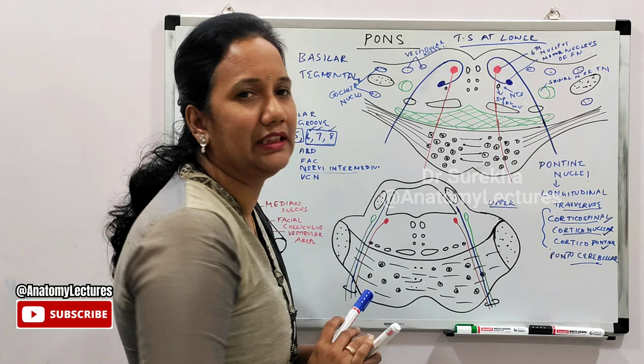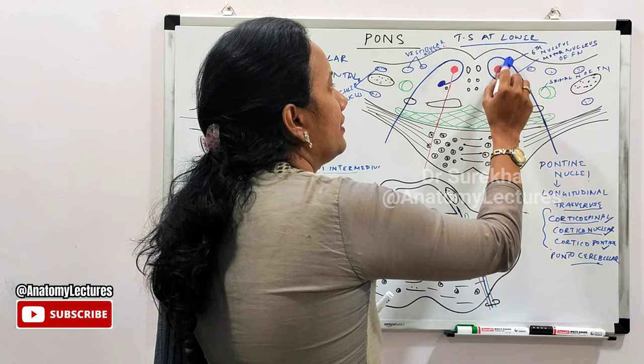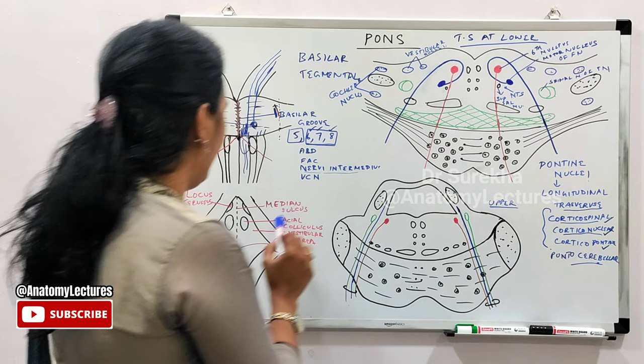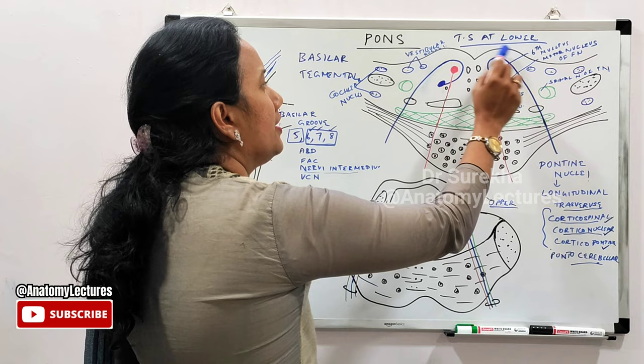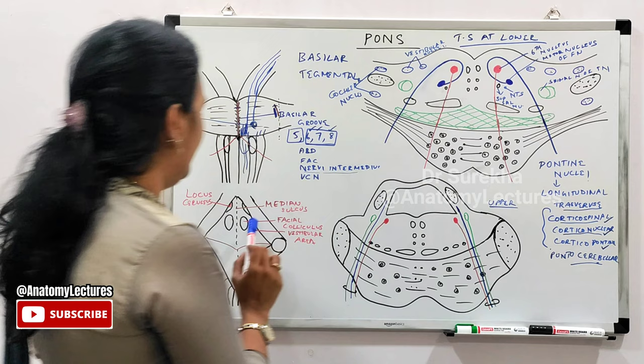The motor fibers of the facial nerve wind around the abducens nerve nucleus, forming an elevation in the floor of the fourth ventricle — this is the facial colliculus. Lateral to this, the vestibular nuclei relate to the lateral vestibular area.